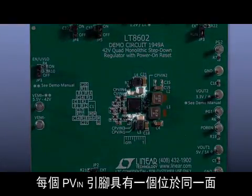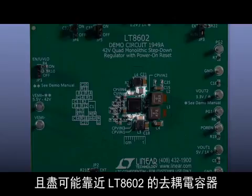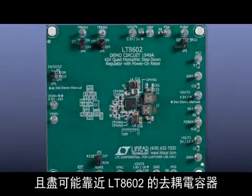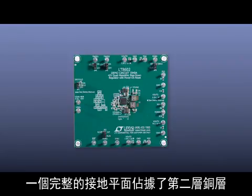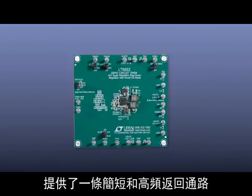Each PVN pin has a decoupling capacitor placed on the same side and as close as possible to the LT8602. An unbroken ground plane occupies the second copper layer providing a short high frequency return path.